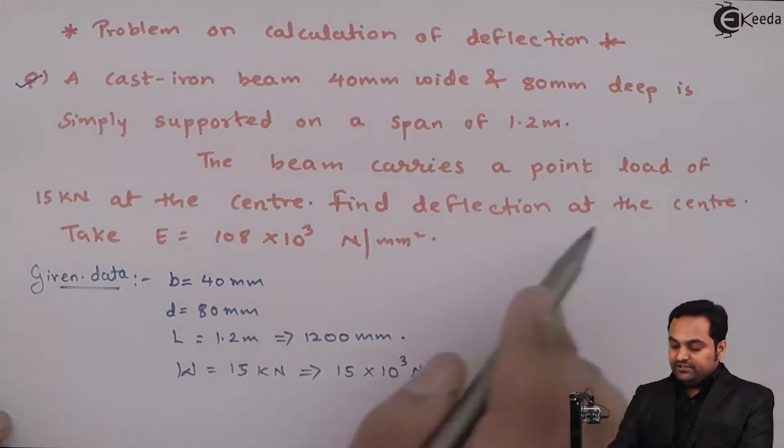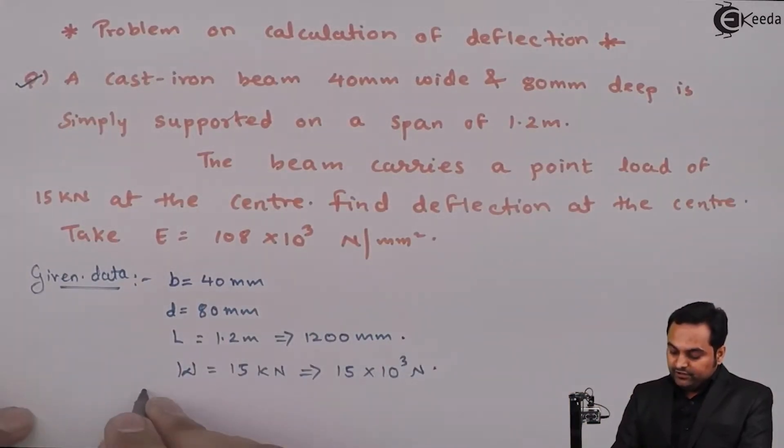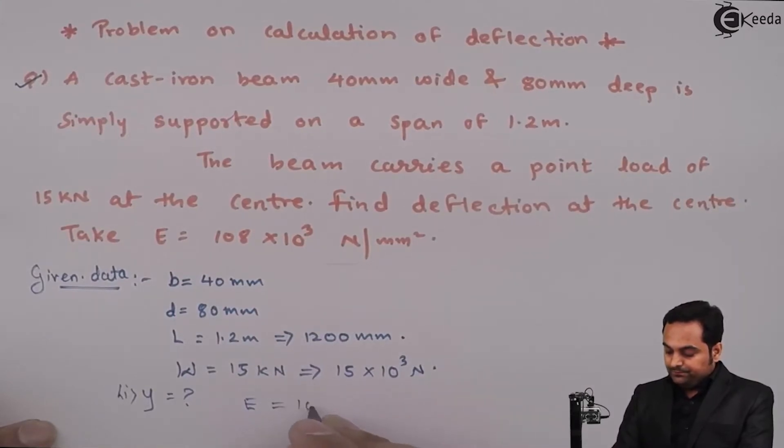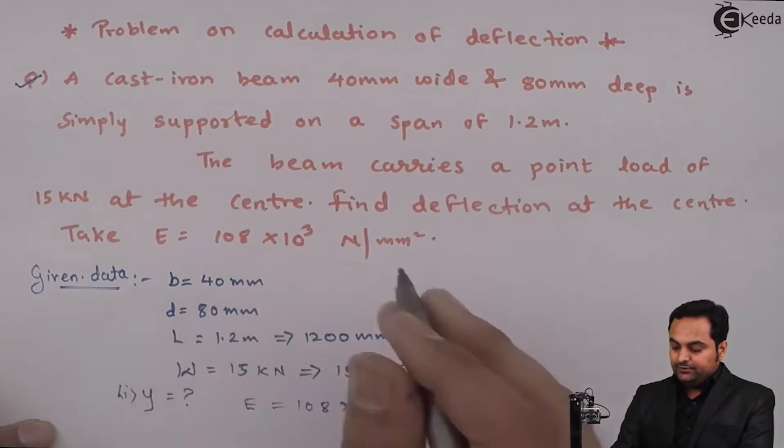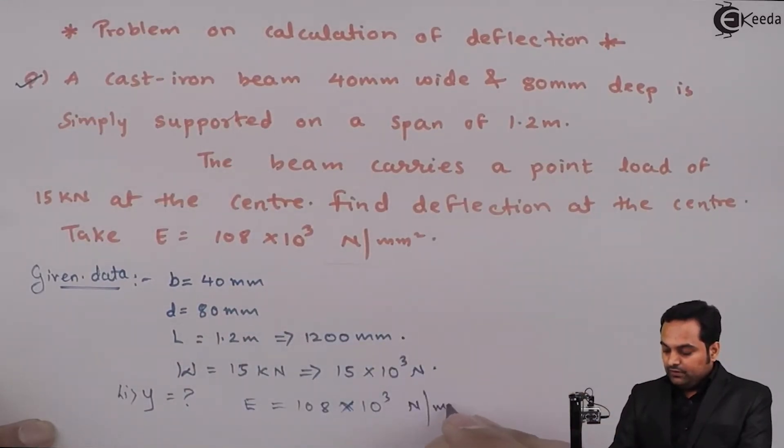At the center, find the deflection at the center. So we have to find out y, that is the value of deflection at the center. Take capital E, that is Young's modulus for the beam material, 108 into 10 raise to 3 Newton per mm square.